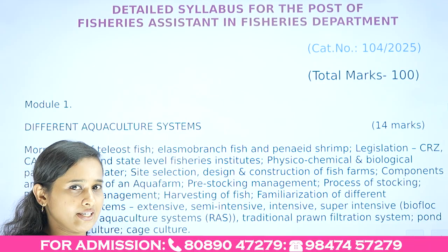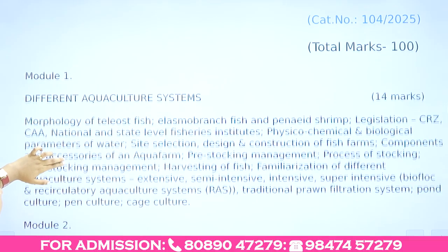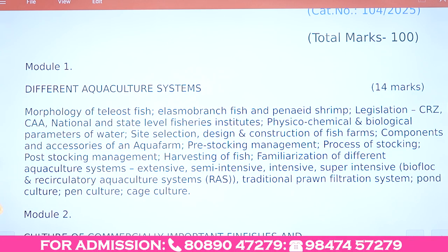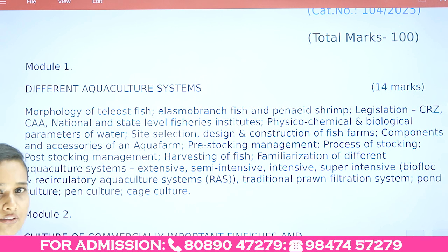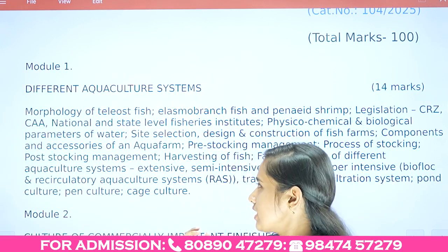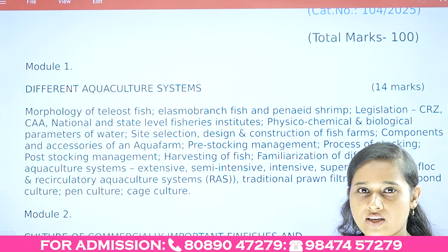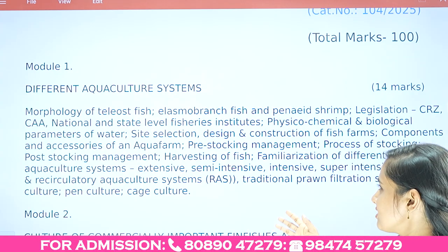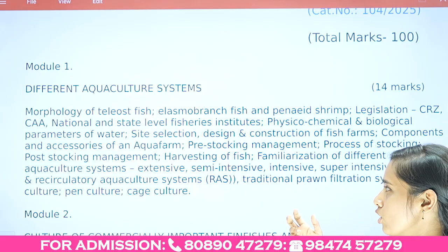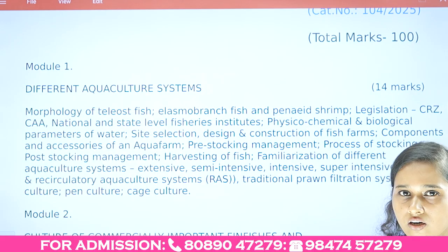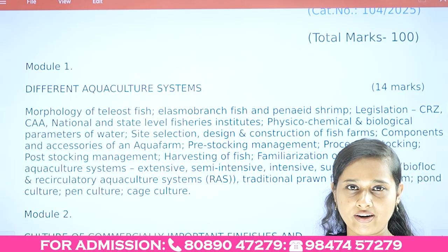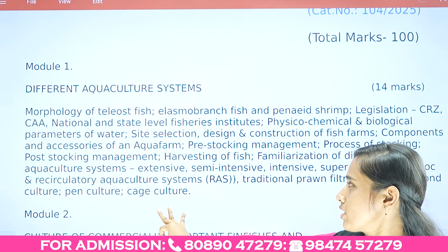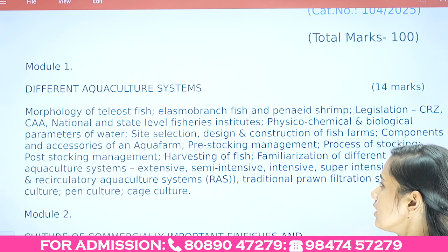Module 1 covers different aquaculture systems. Topics include morphology — we have to look at elasmobranch, teleost, and crustaceans. We also cover aquaculture-related physical, chemical, and biological parameters, site selection, design and construction, various accessories and components, and stocking-related aspects including pre-stocking management, stocking, and post-stocking management such as harvesting.